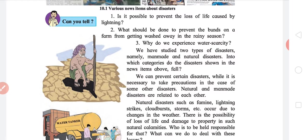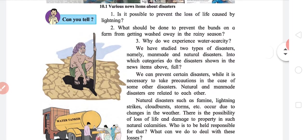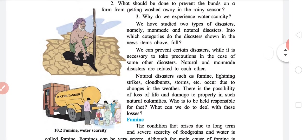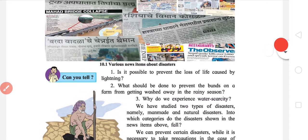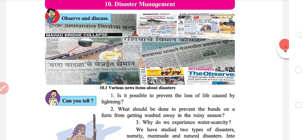What can be done to prevent the barns on a farm getting washed away in the rainy season? Look at it. And three, I do experience water scarcity. We have dealt with two types of disasters, namely man-made and natural disasters. In the news items you see above, try to categorize them into man-made or natural disasters.